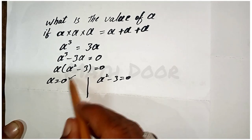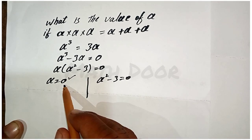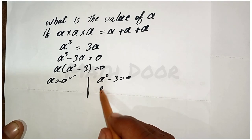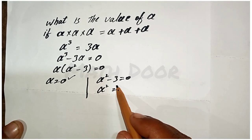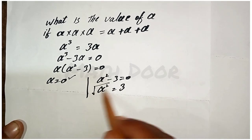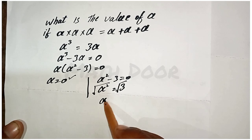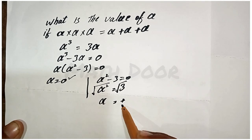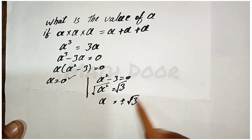We get one answer a = 0. Now for a², we take this 3 to the right side of the equation to get a² = 3. Taking the square root on both sides, we get a = ±√3.